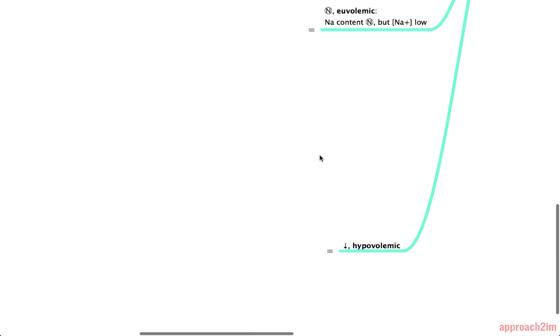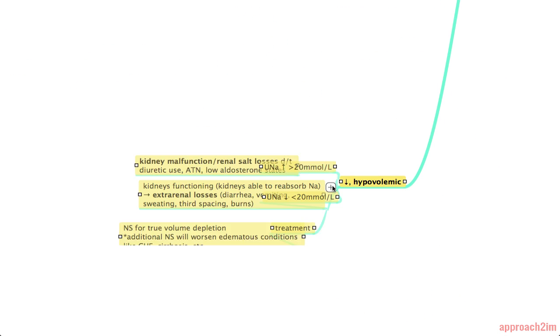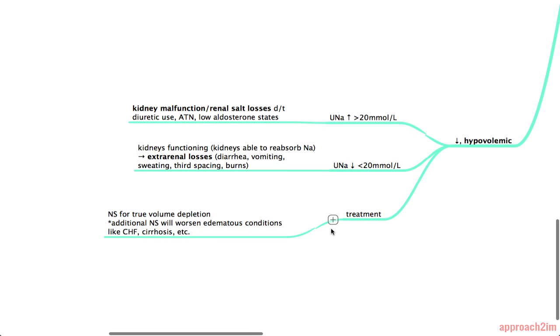Next we're moving on to hypovolemic hyponatremia. So these patients are dry. Again, the next step is to do a urine sodium concentration. But here I want to give you a quick physiological explanation. So when the body is in a hypovolemic state, it wants to hold on to as much water as it can. And the way it does that is the kidney reabsorbs the sodium from the urine into the blood and water will follow that sodium into the blood as well.